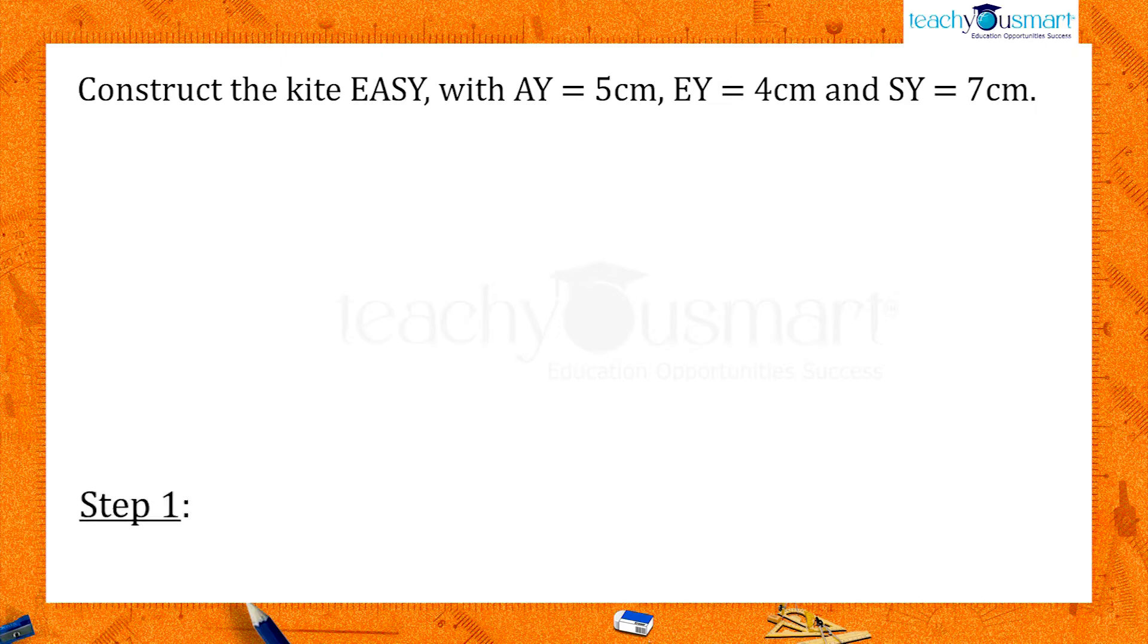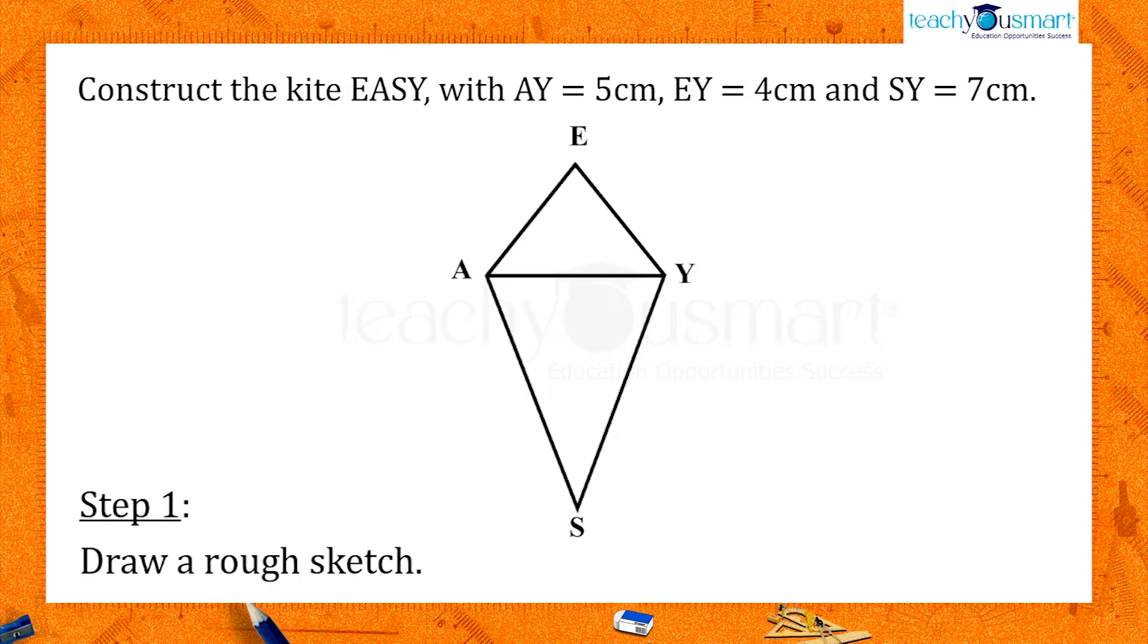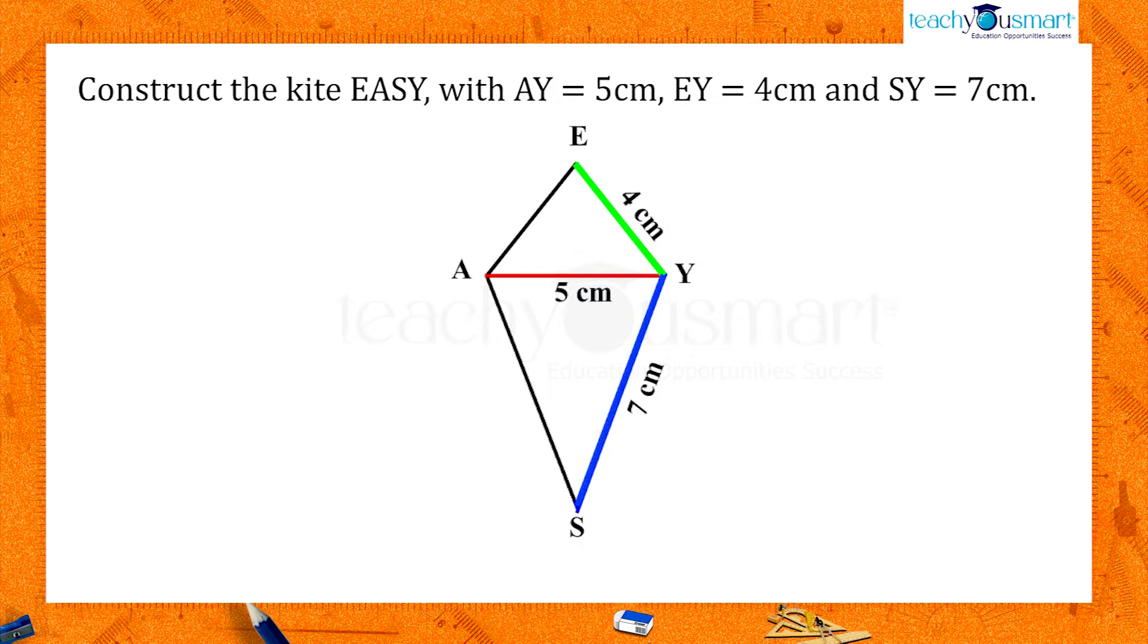As earlier, first we can draw a rough sketch of EASY with AY equals 5 cm, EY equals 4 cm, and SY equals 7 cm.